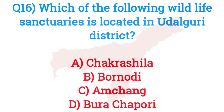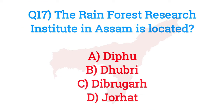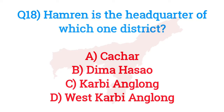Question number sixteen: Which of the following wildlife sanctuaries is located in Udalguri district? The answer is option B — Barnadi. Question number seventeen: The Rainforest Research Institute in Assam is located in? The answer is option D — Jorhat.